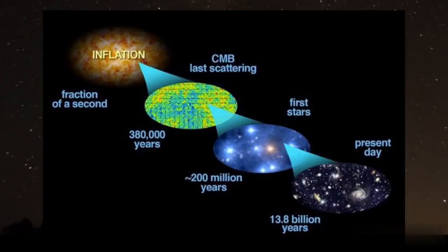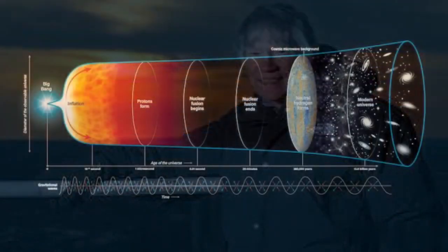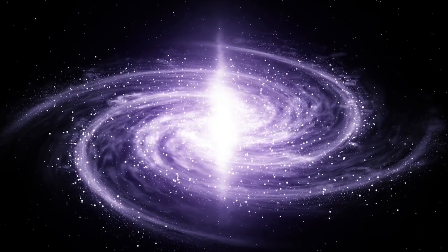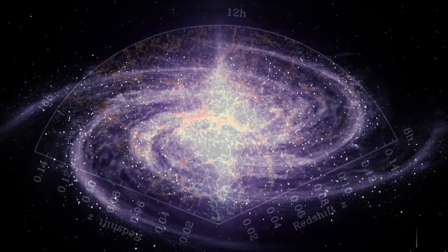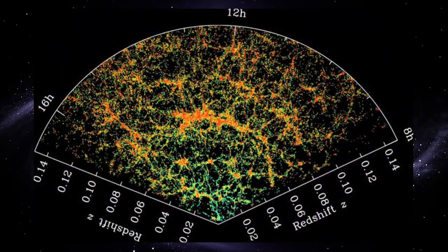Inflationary Cosmology: One of the key developments in the Big Bang Theory is the concept of cosmic inflation. Proposed by physicist Alan Guth in the 1980s, Inflationary Cosmology suggests that the universe underwent a brief period of exponential expansion shortly after the Big Bang. This rapid expansion helps explain why the universe appears remarkably homogeneous on large scales.